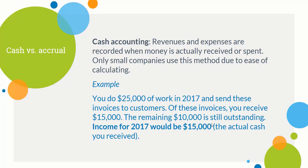Here's an example of cash accounting: say you do $25,000 of work in 2017 and send invoices to all your customers, but you only receive $15,000 in cash — the remaining $10,000 is still outstanding. Under cash accounting, your income for 2017 would only be $15,000 — the actual cash received — not the full $25,000. For tax purposes, you would only show $15,000 in revenue.